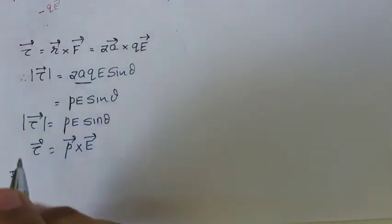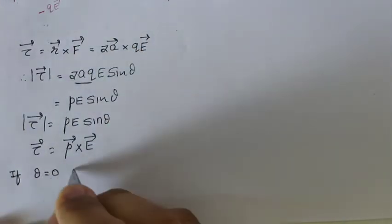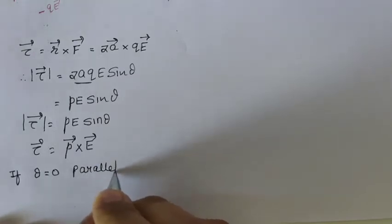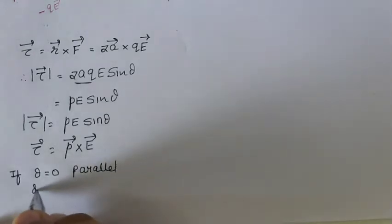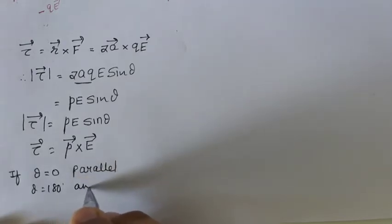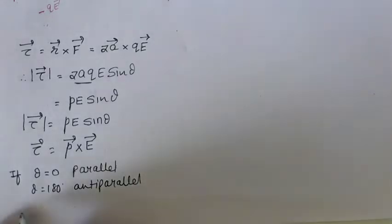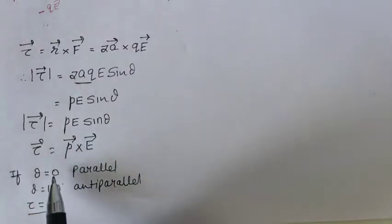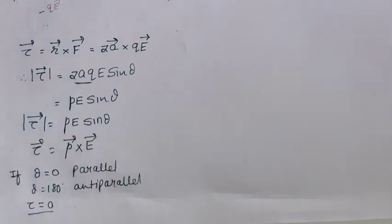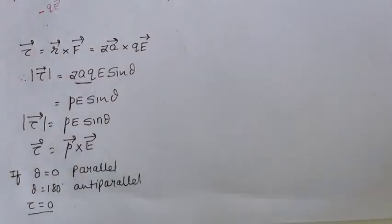If p and E are parallel, theta = 0°, and if they are anti-parallel, theta = 180°. In both conditions, torque tau equals zero, because sin(0°) = 0 and sin(180°) = 0. So these are the equilibrium cases for a dipole in a uniform external field.